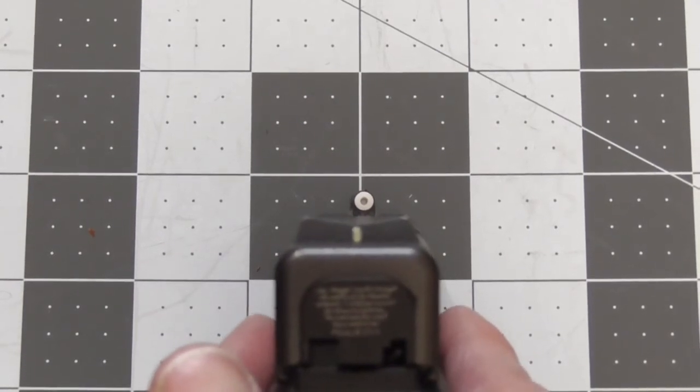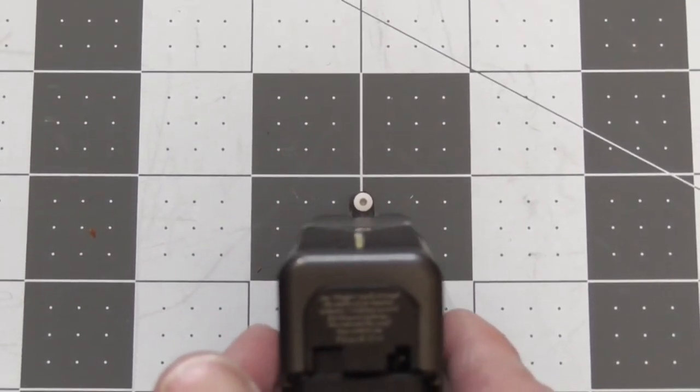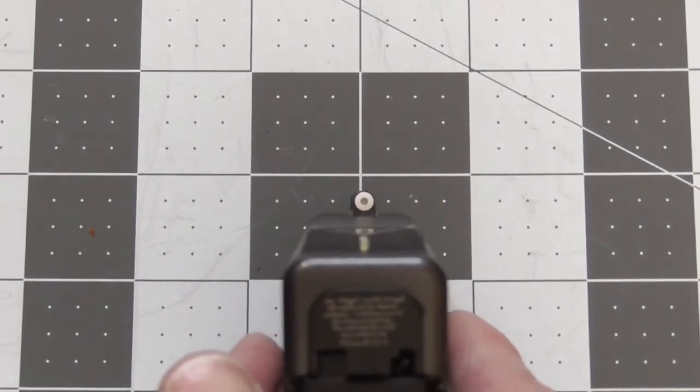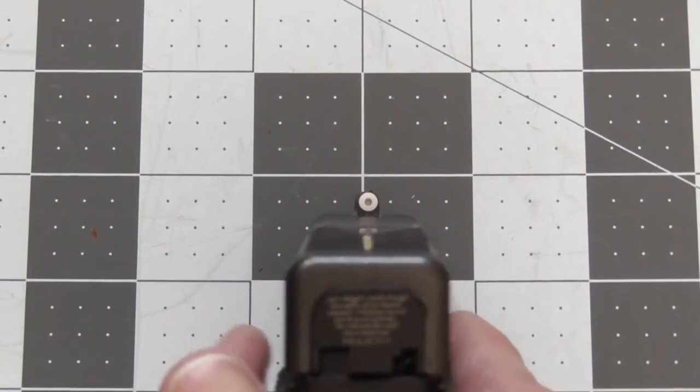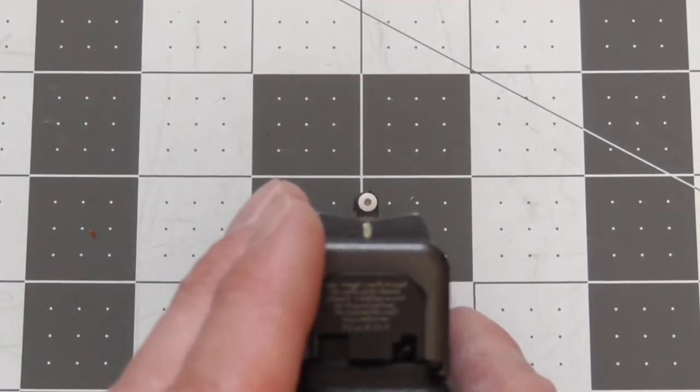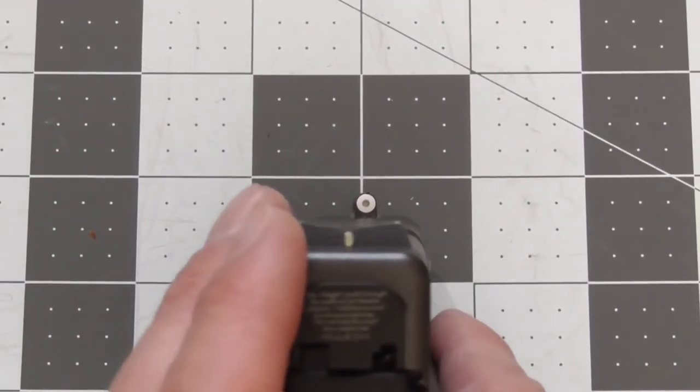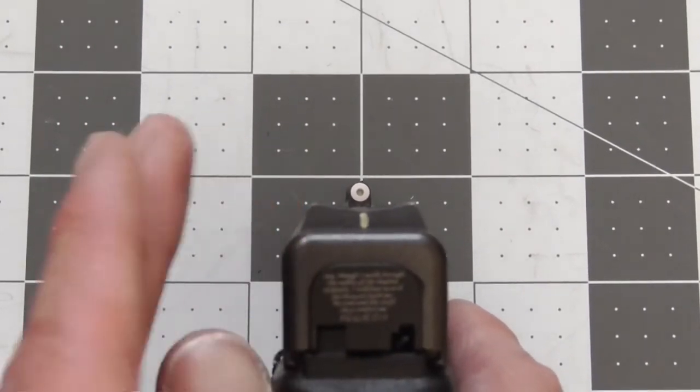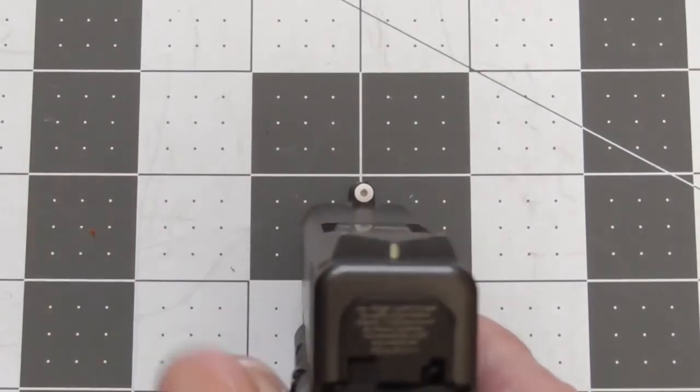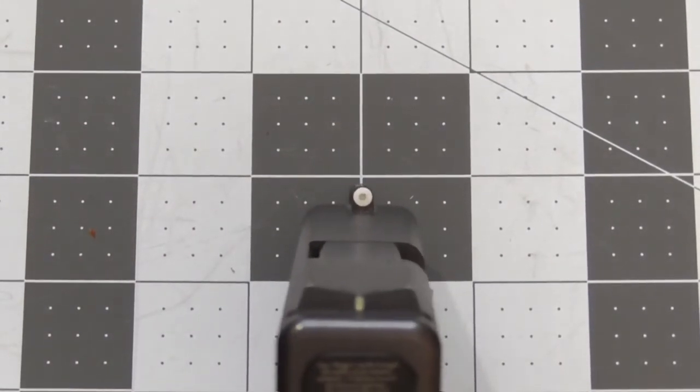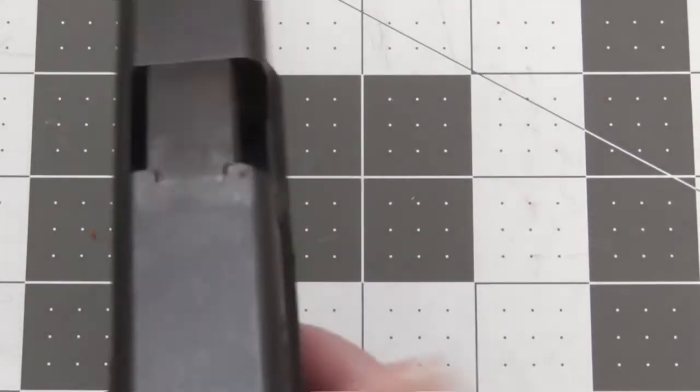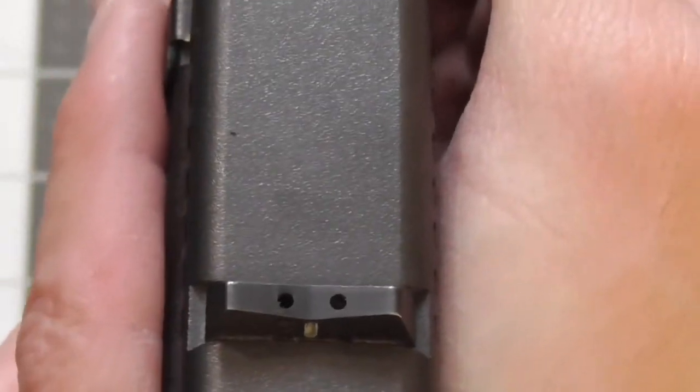These obviously are not a competition sight. So they have just kind of a narrow field of use. But I tell you where else they would shine: if somebody is maybe older, they don't have the sight that they once did have. A big dot is nice to have there. It just kind of grabs the eye a little bit better and it's just going to help you get shots off quicker. That's really it. I just wanted you to have a quick look at it.